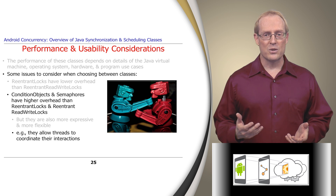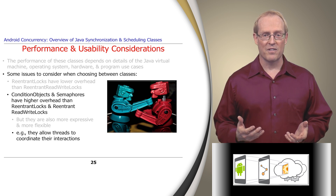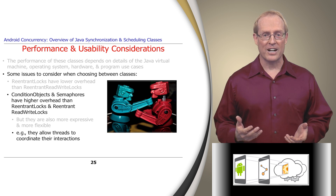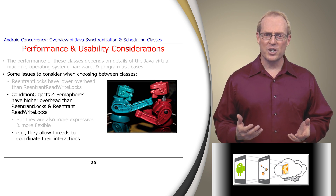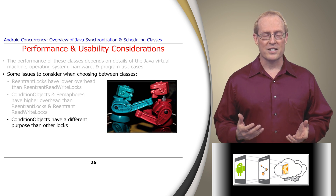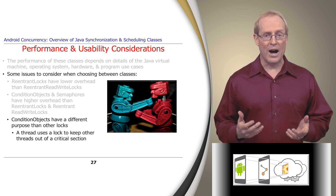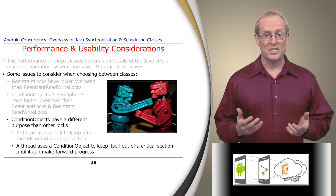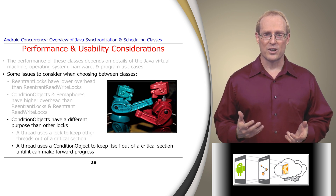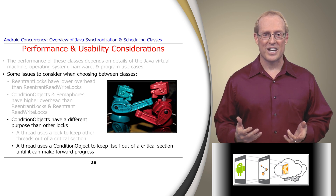For example, threads can use a semaphore to take turns communicating via a shared object. Moreover, condition objects allow threads to coordinate their interactions via arbitrarily complex conditions involving state that's shared by multiple threads. Condition objects have a fundamentally different purpose than reentrant locks and reentrant read-write locks. A thread can use these latter two locks to keep other threads out of a critical section while performing its computations. Conversely, a thread uses a condition object to keep itself out of a critical section until it can make forward progress when changes to shared state occur.